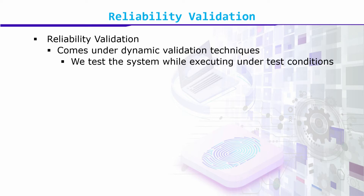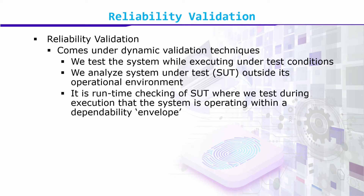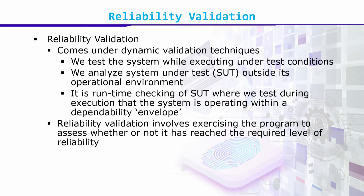We test the system while executing under test conditions and analyze our system under test, that is the SUT, outside its operational environments. We test during execution that the system is operating within a dependency envelope. Reliability validation involves exercising the program to assess whether or not it has reached the required level of reliability.